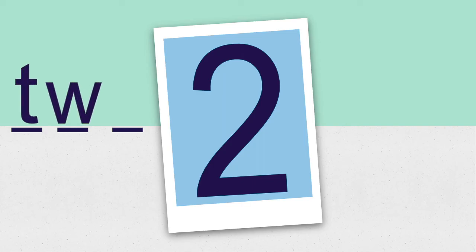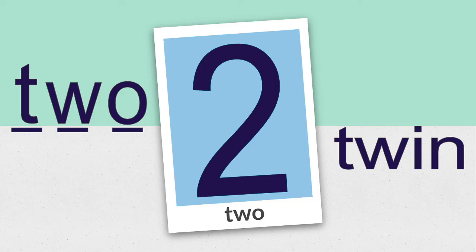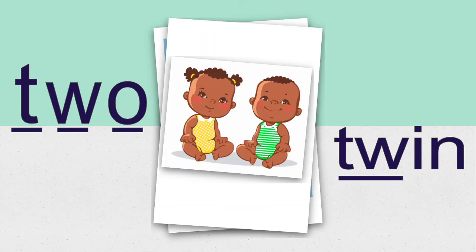We're going to take a look at the word two. The word two has three letters — T, W, and O. If you tried those sounds it would not sound like the word two. T, W, O spells two. The first two letters of the word two — T, W — are also the first two letters in the word twin. If you have twins, there are two babies. Both the word two and the word twin start with T, W.